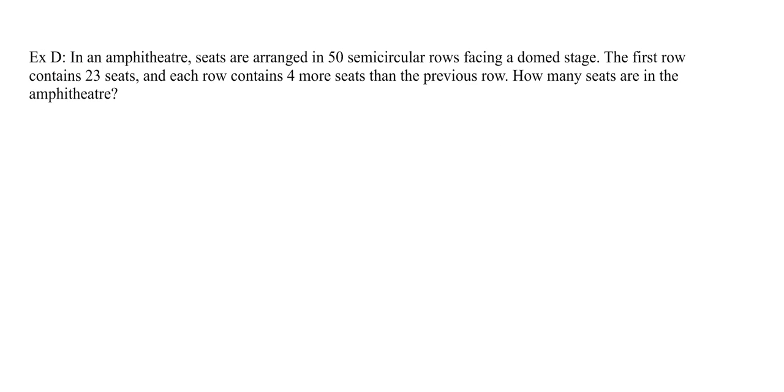So we can use this in a lot of different ways. So now this is a different kind of series where we're increasing by 4 instead of 1. So it's like example C-A. You can go ahead and pause the video. But here I can see that it's 50 semicircles, so n equals 50. And the first row has 23 seats, so a equals 23. Each row contains 4 extra seats than the previous row, so d is equal to 4. How many seats are in the amphitheater?